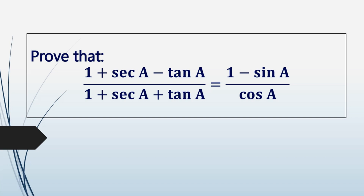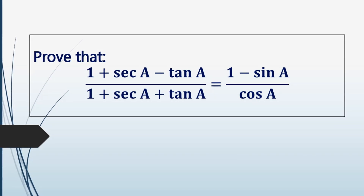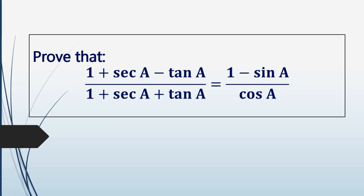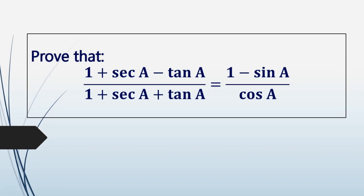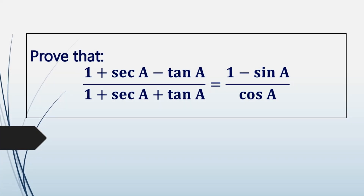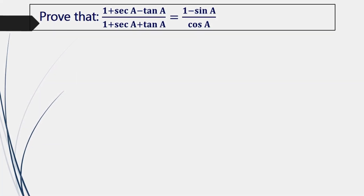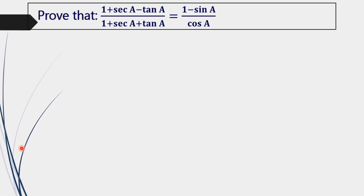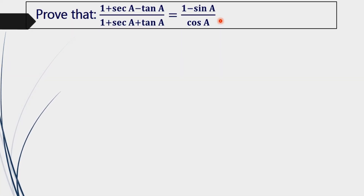Trigonometry problem: prove that (1 + csc A - tan A) divided by (1 + csc A + tan A) equals 1 minus sin A divided by cos A. We have to prove LHS of this equation equals RHS.